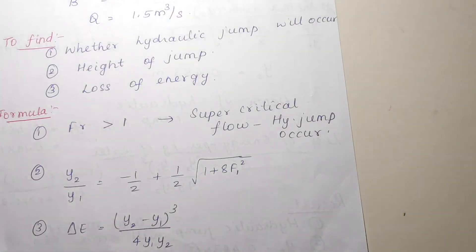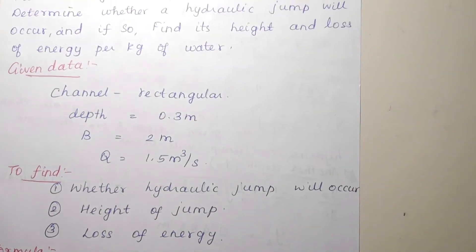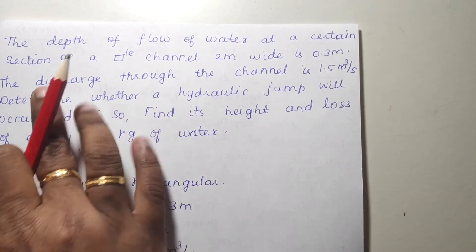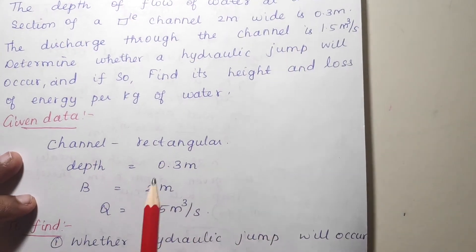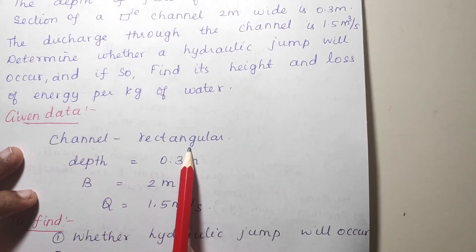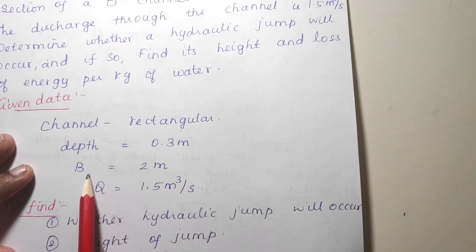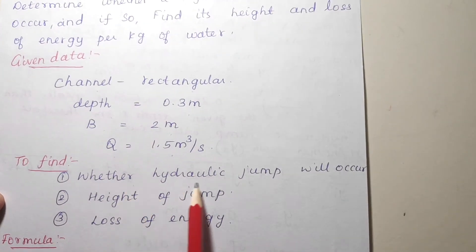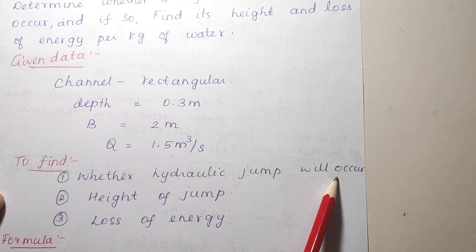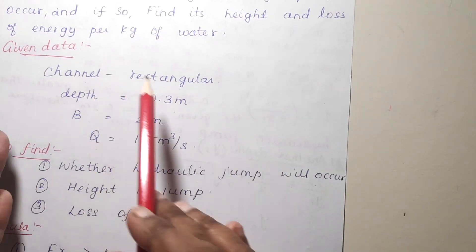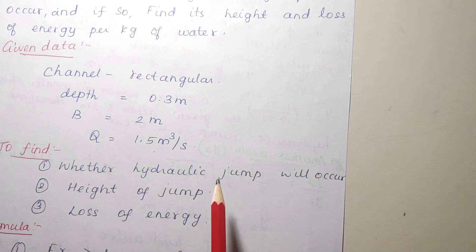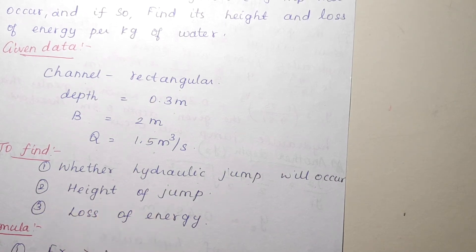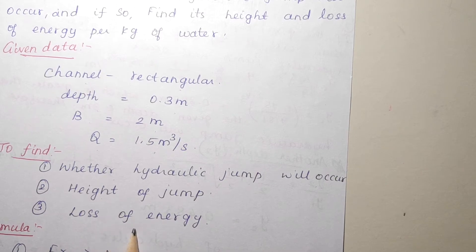The next problem: the given data are a rectangular channel, depth = 0.3 meters, width = 2 meters, and discharge is given. We have to find whether the hydraulic jump will occur or not. Additionally, we have to find the height of the jump and the loss of energy.